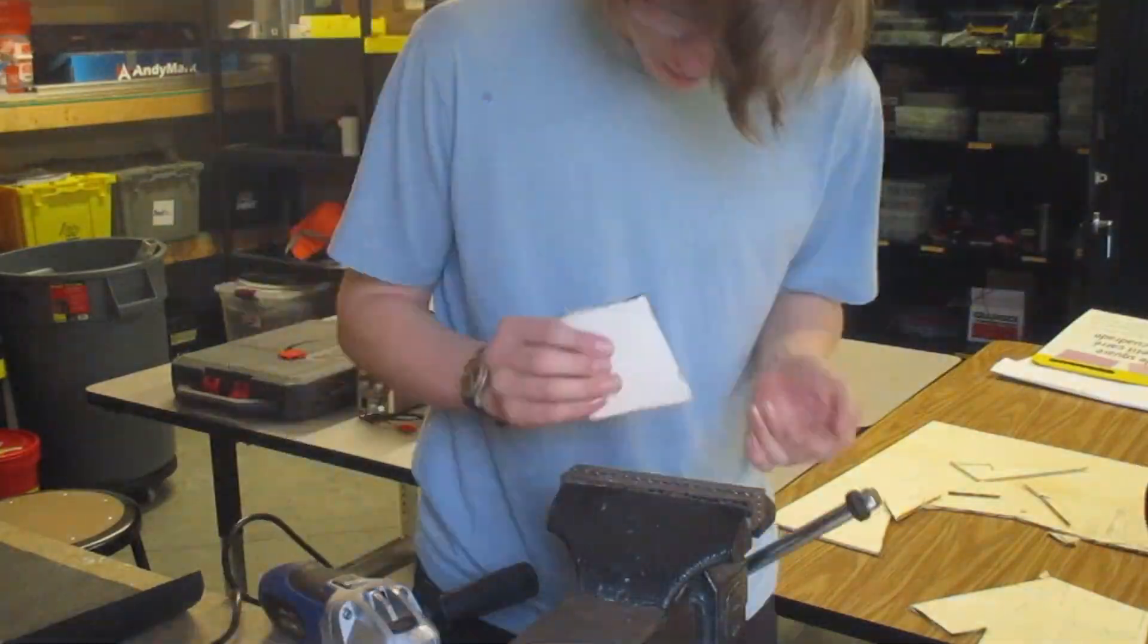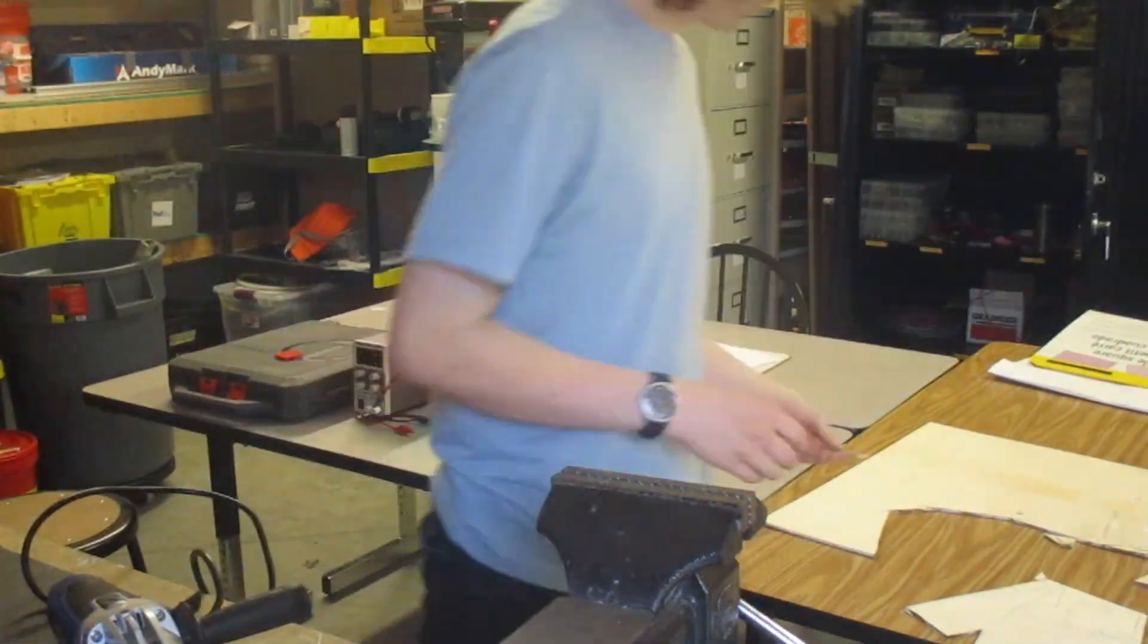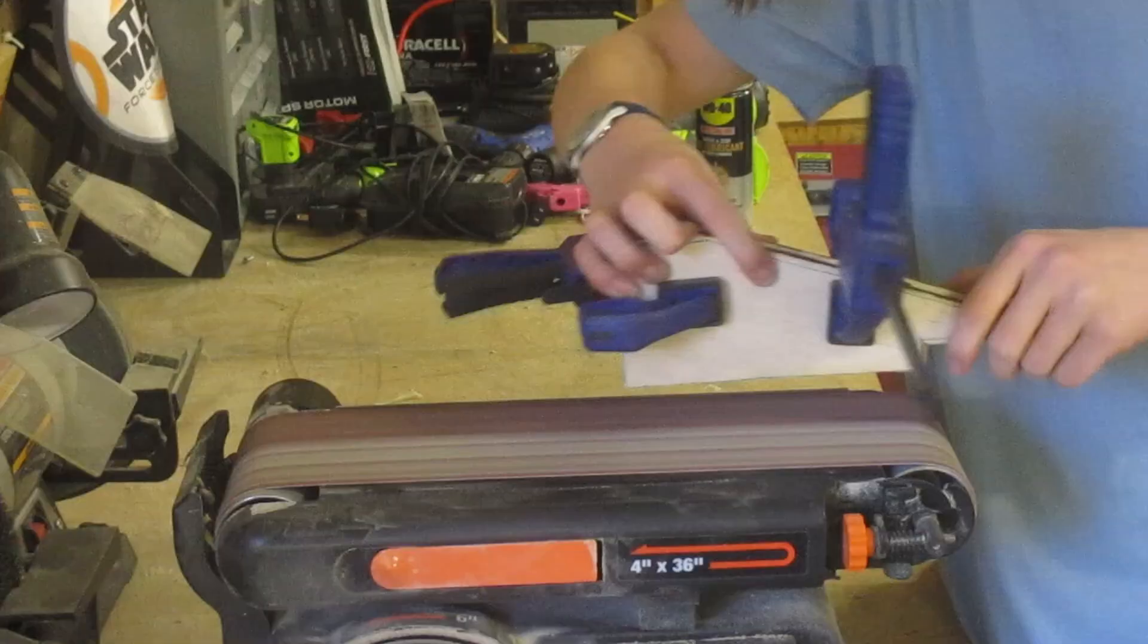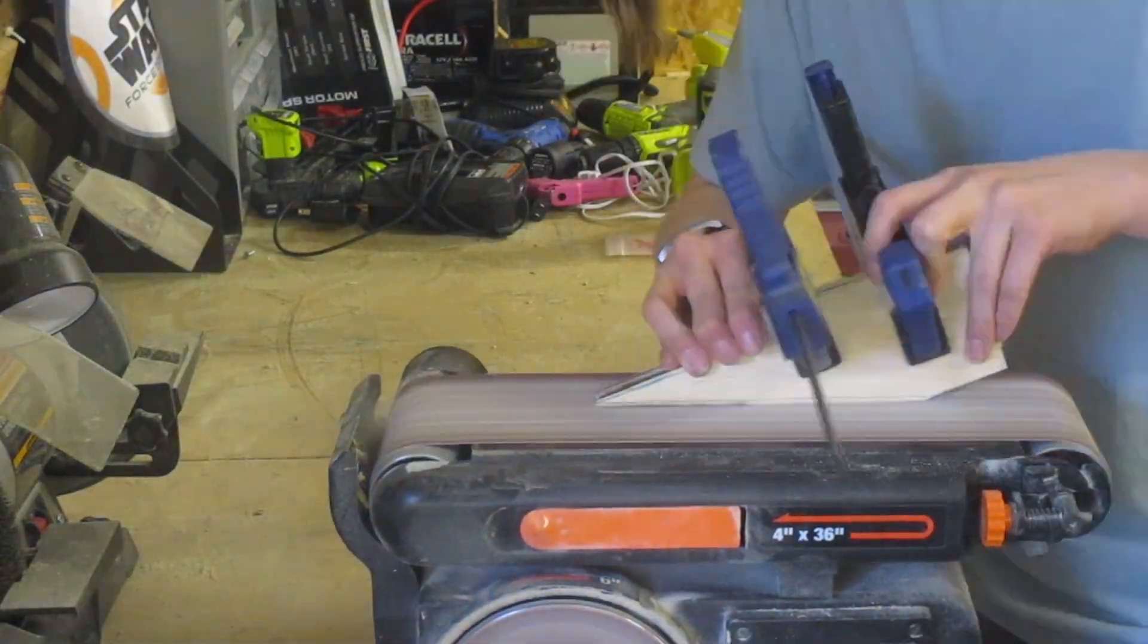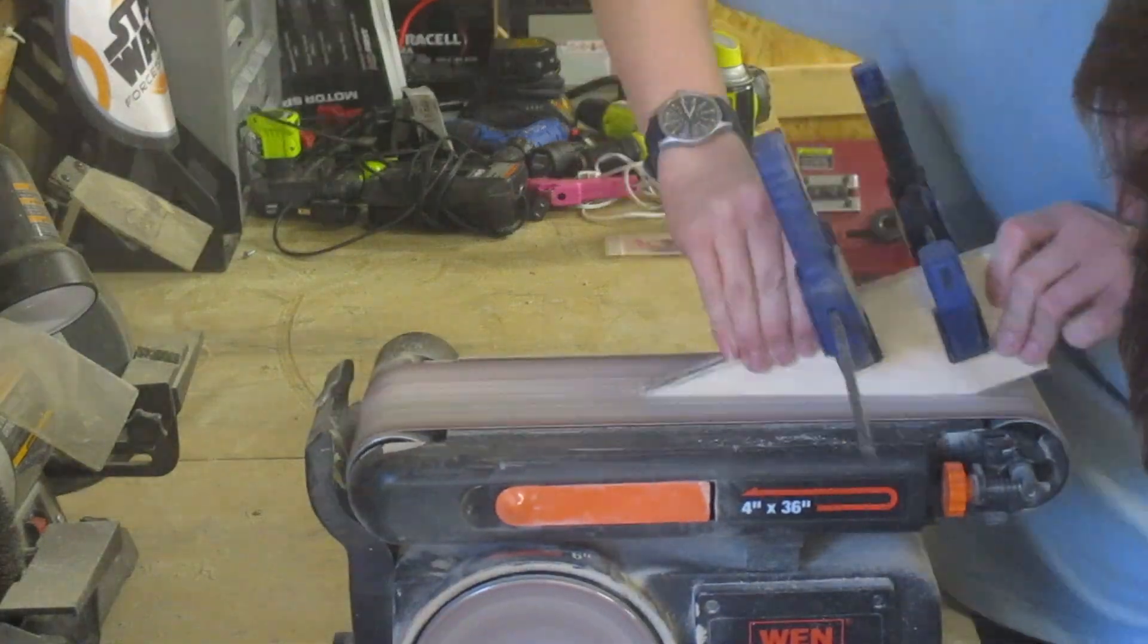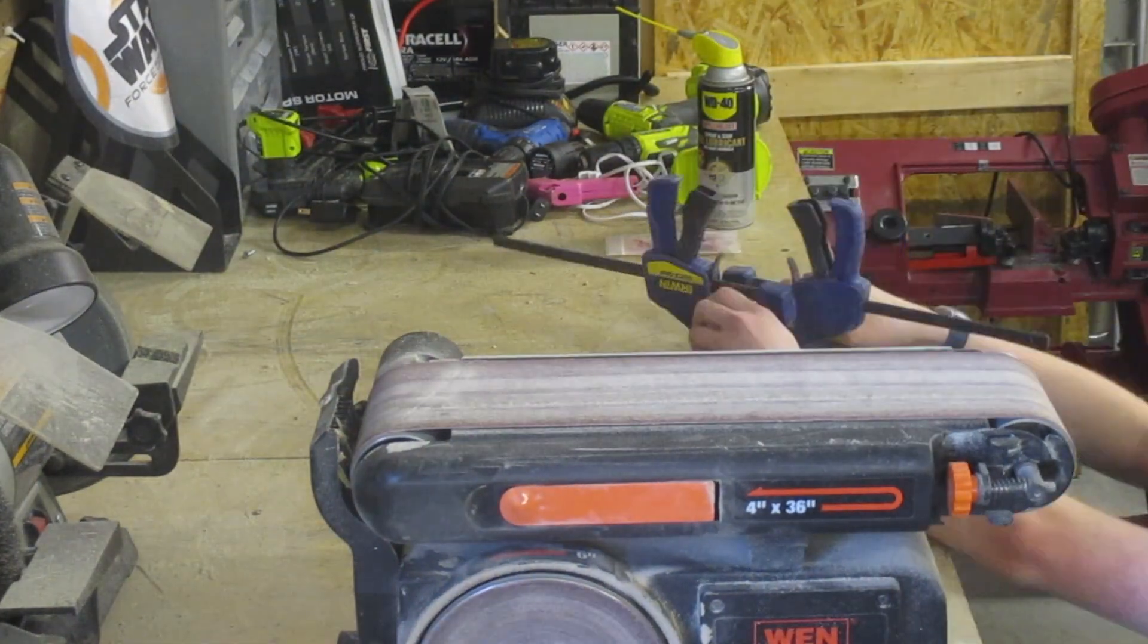The next most important thing to do is clamping them together and then taking them to the belt sander. It doesn't matter too much if they're identical to the CAD, but you want them to be identical to each other, that way when they're in flight there won't be any shifting or pitching.